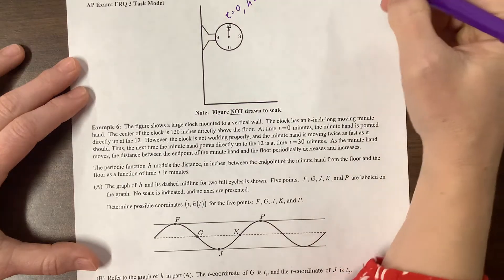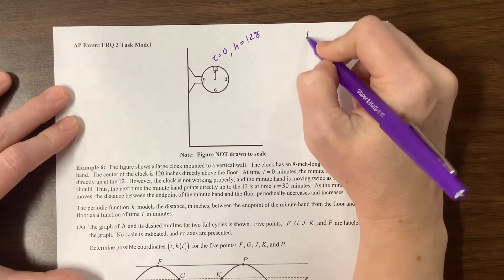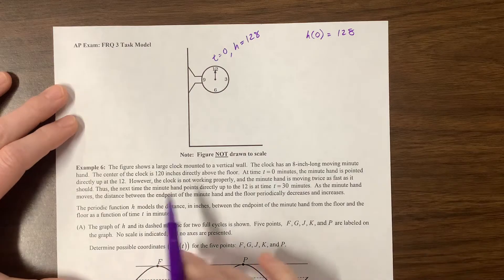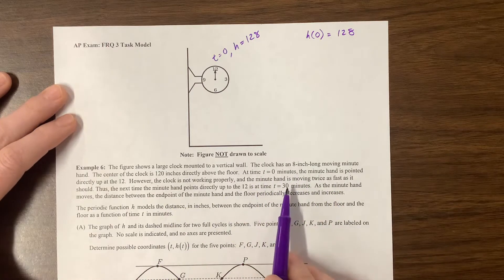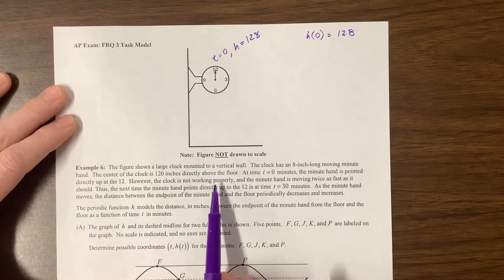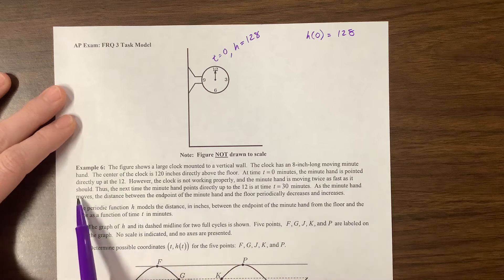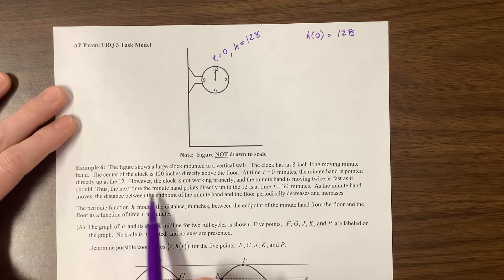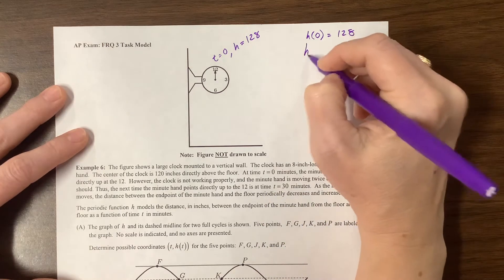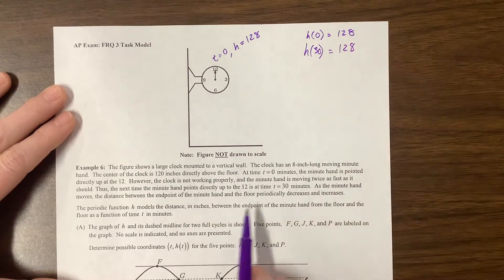At time zero, the minute hand is pointed directly up at the 12. So this point right here is time zero, and how high is it? The middle was 120 inches off the ground, and then we're eight inches beyond that. So this height at that time is 128. So h of zero will be equal to 128. However, the clock is not working properly. The minute hand is moving twice as fast as it should. Thus, the next time the minute hand points directly up is at time 30. So we could say h of 30 is equal to 128 also.